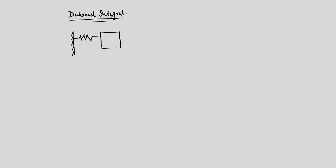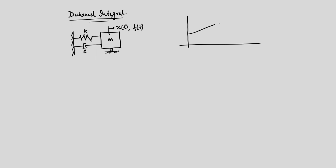We have this SDOF system and it is excited by some arbitrary forcing function. We know the stiffness, damping, mass, and the degree of freedom is x of t, and the forcing function is f of t. We developed the argument that we have an arbitrary forcing function, and at time point tau we consider a differential element.